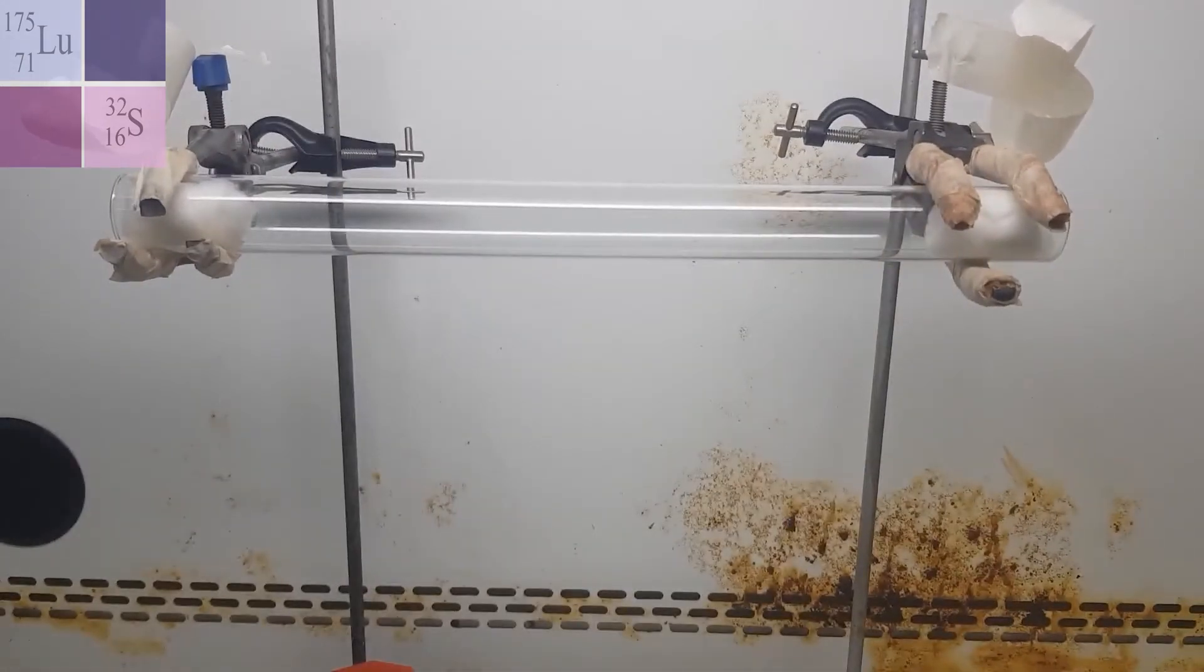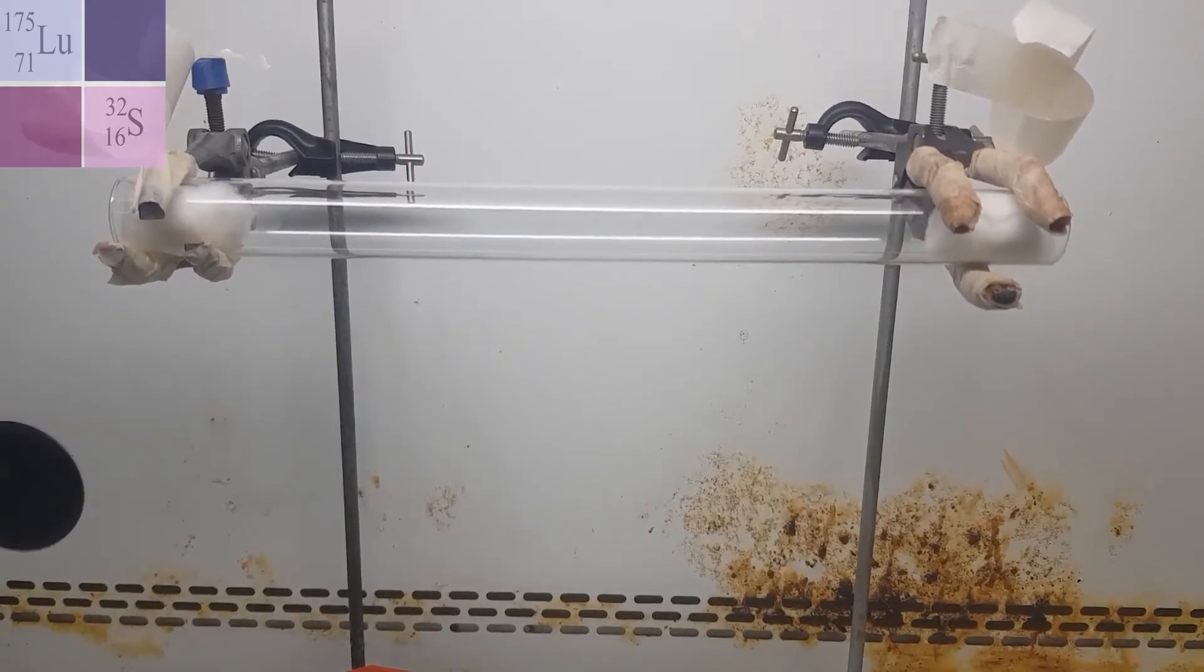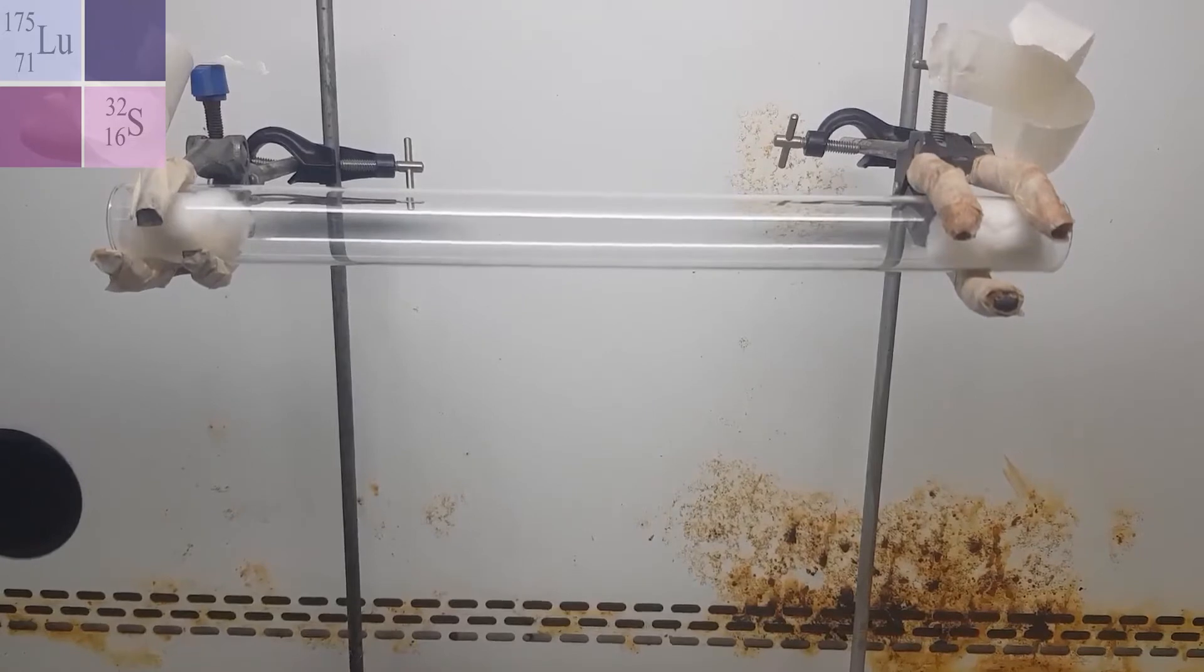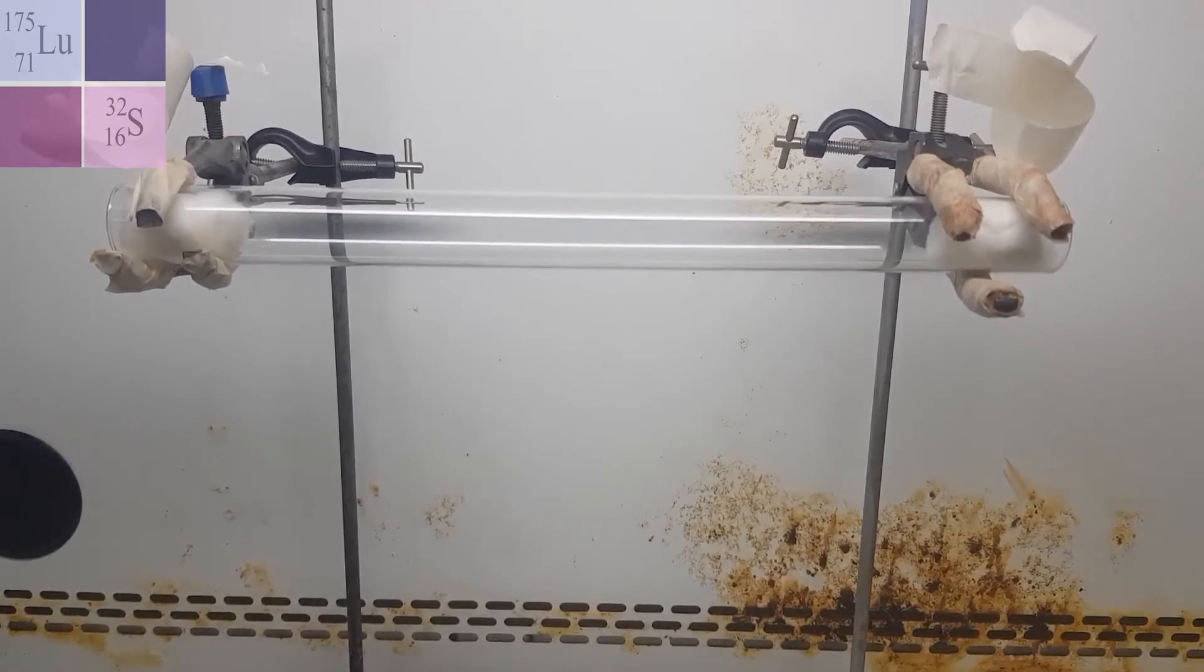So how will we tell when that happens? Well, when HCl combines with ammonia, a white solid is formed, ammonium chloride. So we should see that as a ring forming. Now, the ring will form closer to the side with the heavier gas. So that's what we're going to look out for.